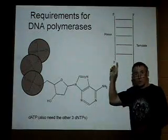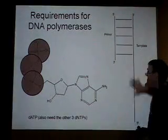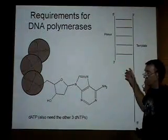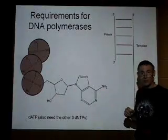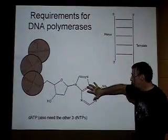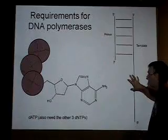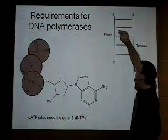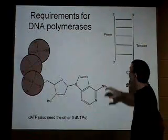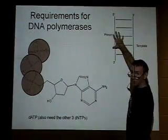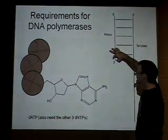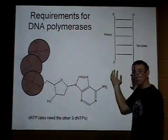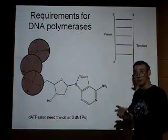DNA polymerases have two other requirements. First, they require a template — a single strand of DNA that lines up the new nucleotides in the correct order. Incoming dNTPs pair by complementary base pairing with bases on that existing template strand. The other requirement is a primer: a region where the DNA molecule is already double-stranded, with a 3 prime end available. DNA polymerase acts by adding dNTPs onto that 3 prime end.